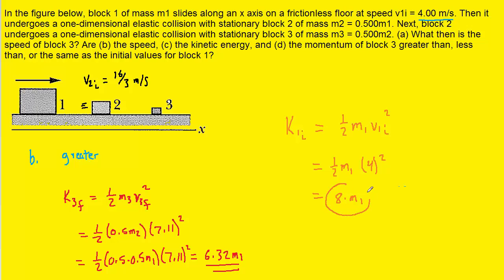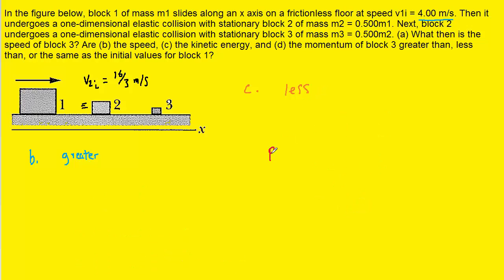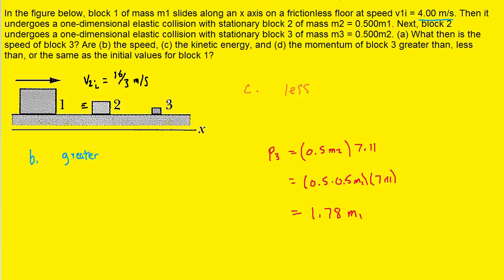The initial kinetic energy of block 1, at 8 m1, is greater than the kinetic energy of block 3 at 6.32 m1. So for part C, the kinetic energy of block 3 is less than the initial value for block 1. For part D, the momentum of block 3 is its mass — 0.5 m2, or 0.5 times 0.5 m1 — times its velocity of 7.11, giving about 1.78 m1. The initial momentum of block 1 is m1 times 4, which is 4 m1. So the momentum of block 3 is less than the momentum of block 1, and the correct answer to part D is also less than.